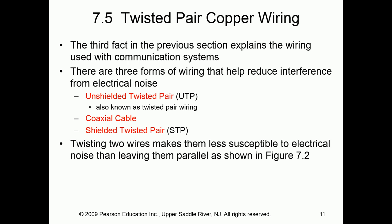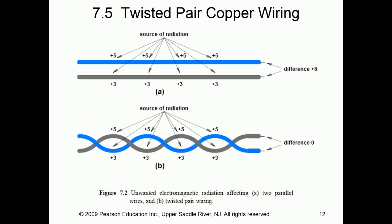The main difference between UTP and STP is UTP has no shield; STP does. Now we can look at why they're twisted. If the wires are not twisted, there's a source of radiation and a difference between the cables. Versus if they're twisted, there is no difference — matching up the values, there's no net difference, which means they are less susceptible to noise.